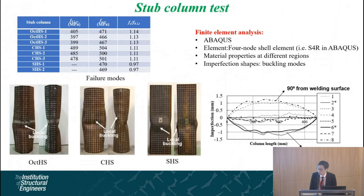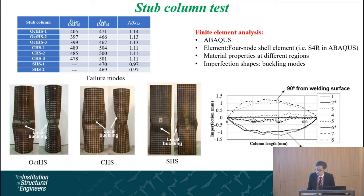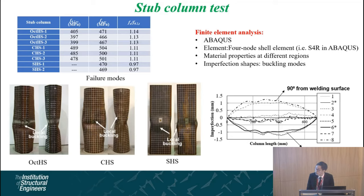We then conducted stub column tests and the results are summarized in a table. We found that with similar cross-section dimensions, the octagonal and circular sections are all class 1 to 3 sections, having ultimate stress larger than the material yield stress. However, the square section is a marginally class 4 section.